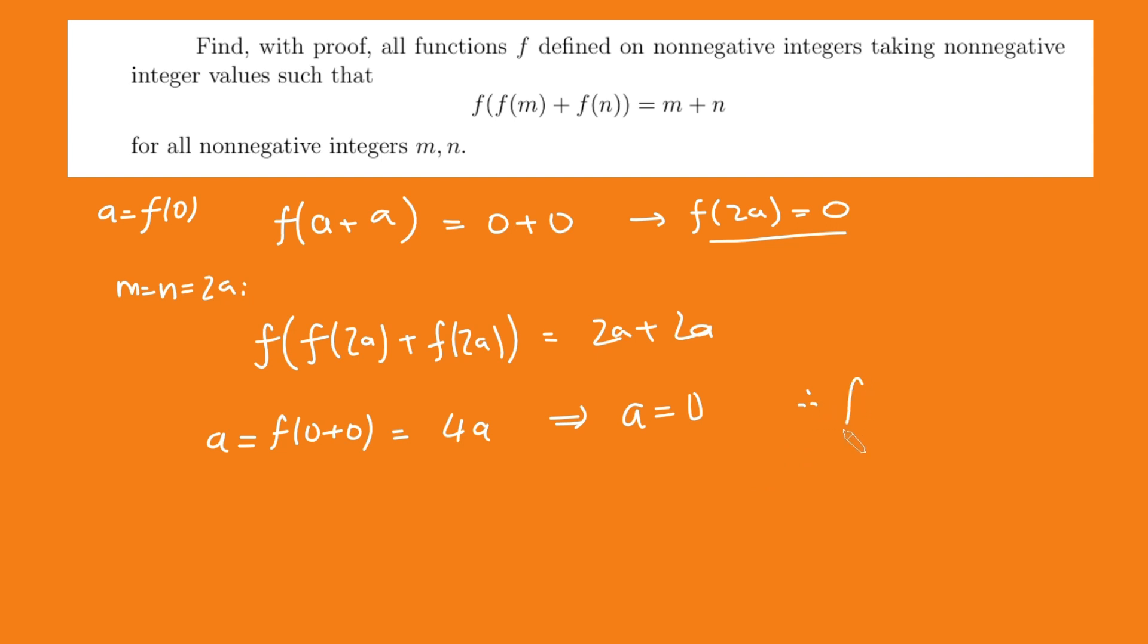And so therefore, we've worked out that f of 0 is 0, which is super useful. Now we're going to use that to try and work out some information about f in general at other values.